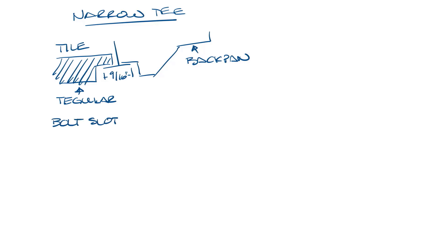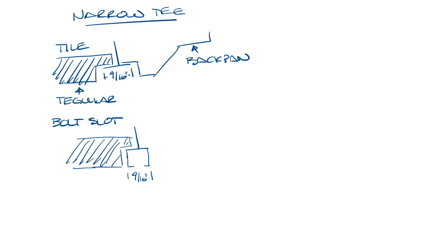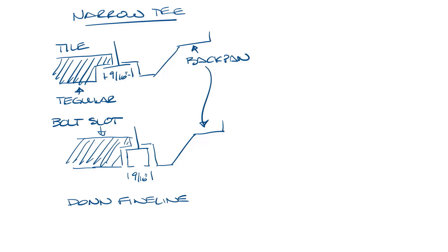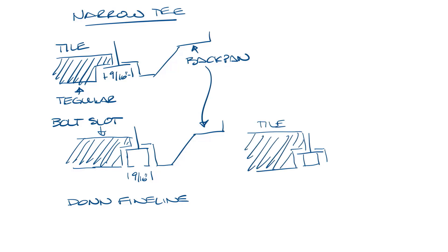You can also have a bolt slot ceiling grid, which looks like this. Again, it's 9/16 inch wide, but the diffuser and the ceiling tile will sit below it. In some cases, this is called a Don fine line ceiling because that is USG's name for it and it kind of caught on. Next, there's a reverse bolt slot ceiling. It looks something like this, and the ceiling tile and diffuser would sit on it kind of like this.